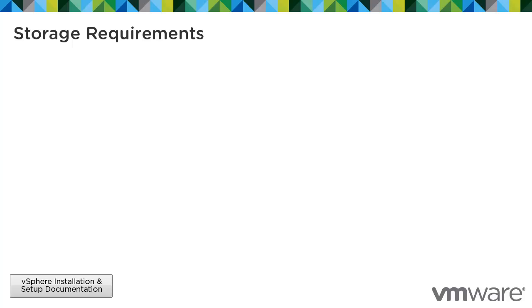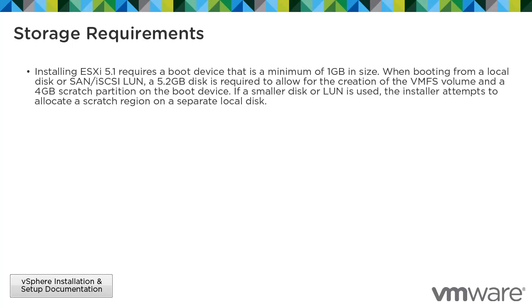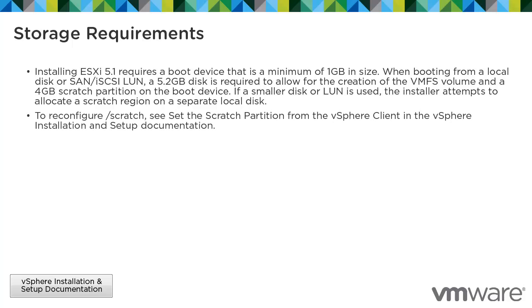ESXi 5.1 has the following storage requirements. Installing ESXi 5.1 requires a boot device that is a minimum of 1GB in size. When booting from a local disk or SAN iSCSI LUN, a 5.2GB disk is required to allow for the creation of the VMFS volume and a 4GB scratch partition on the boot device. If a smaller disk or LUN is used, the installer attempts to allocate a scratch region on a separate local disk. To reconfigure the scratch, see 'Set the Scratch Partition from the vSphere Client' in the vSphere installation and setup documentation.